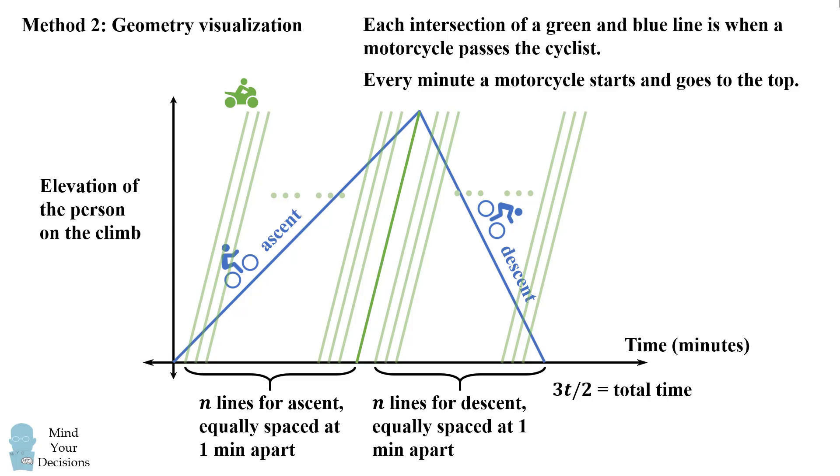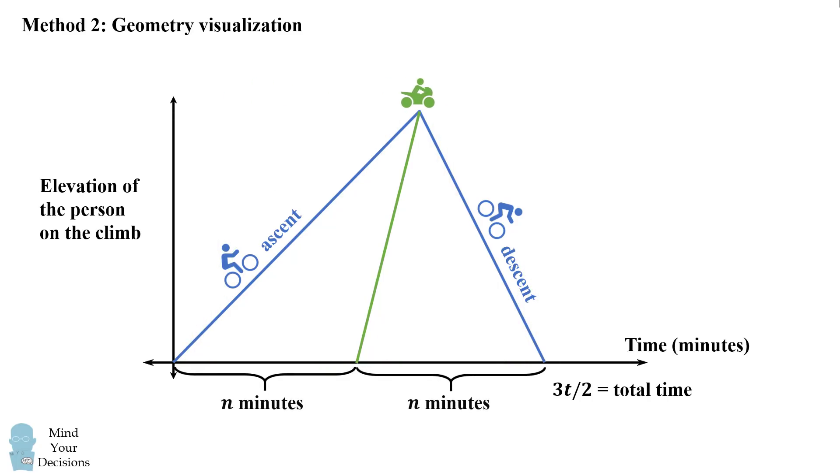Putting this together, we have that there will be an equal time to the left of this line and an equal time to the right of this line. The motorcycle that reaches exactly when the cyclist reaches the top divides this graph into n minutes on the left and n minutes on the right.